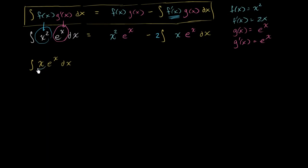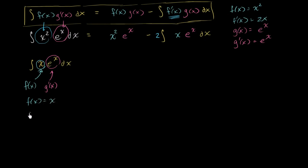When I take the derivative of x, it's going to get simpler. So for the purposes of this second integration by parts, let's redefine f of x to be equal to just x, and we can still have g prime of x equal to e to the x. So f of x equals x, f prime of x equals 1, g prime of x equals e to the x, and g of x equals e to the x.